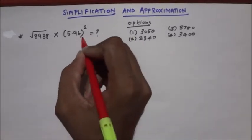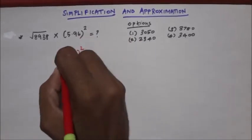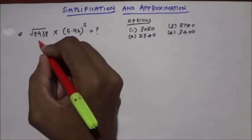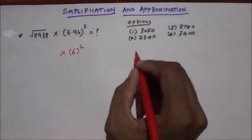So you can see it is 5.96, and you can add 6 square. This is what I told you.